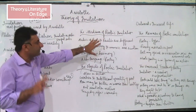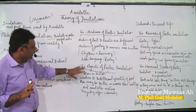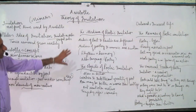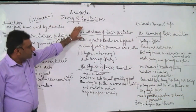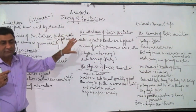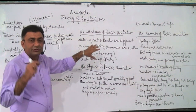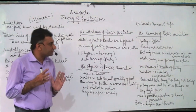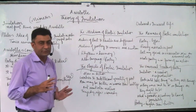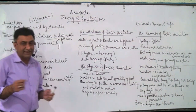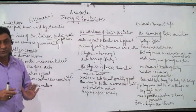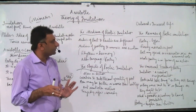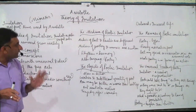The three dimensions are: the medium of poetic imitation, the objects of poetic imitation, and the manners of poetic imitation. Whereas the medium is concerned, painting, music, and sculpture are imitative arts, but the poet's medium is different from a painter's medium. A painter uses colors and brush, while a poet uses words, rhyme, and rhythm. The poet's medium of imitation is different from painting.